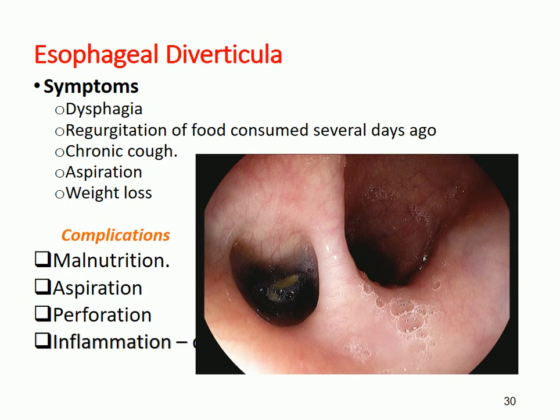The symptoms of esophageal diverticulum include, first, dysphagia — difficulty in swallowing foods. As we have seen, the Zenker's diverticulum is a compressible mass in the neck that compresses the original esophagus, causing difficulty during swallowing.